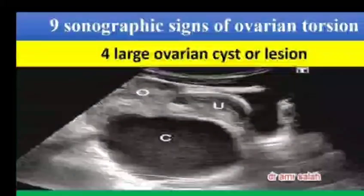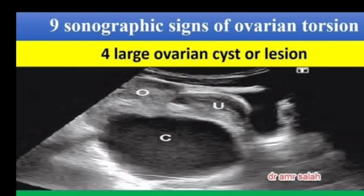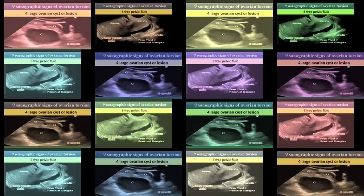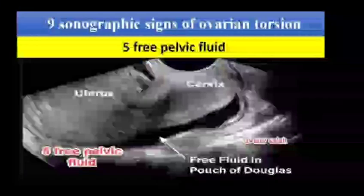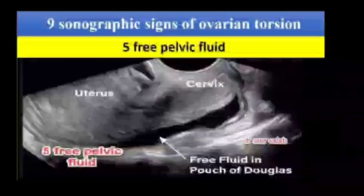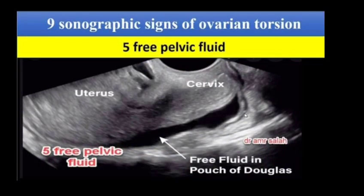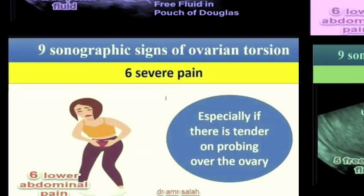Sign number 4: Large ovarian cyst or lesion. Presence of a cyst or lesion with pain raises the possibility of torsion. Sign number 5: Free fluid in the pouch of Douglas, which can also be a suspected sign of torsion.